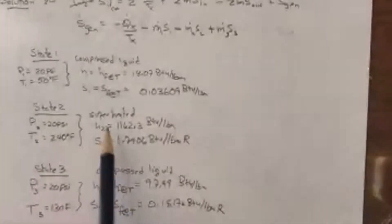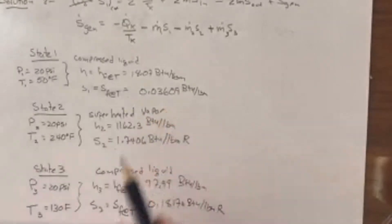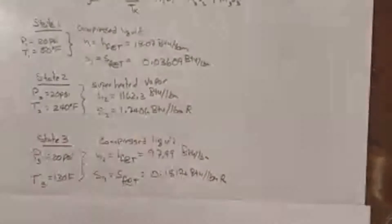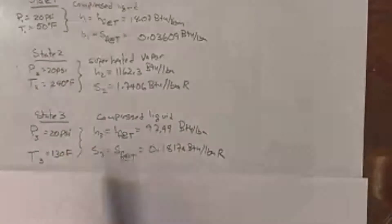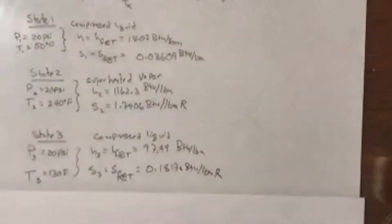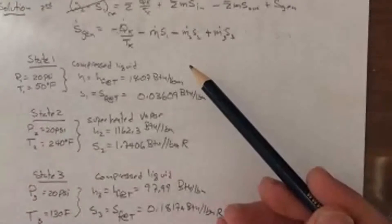And here's state two. It turns out to be a superheated vapor. So that's going to be easy enough to find, do some interpolation off the charts. And then finally compressed liquid is state three.